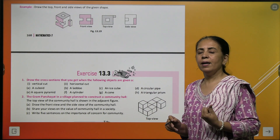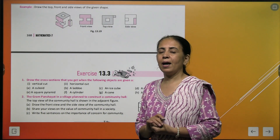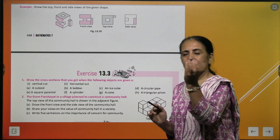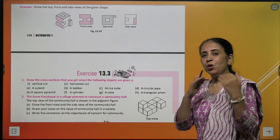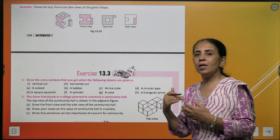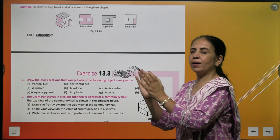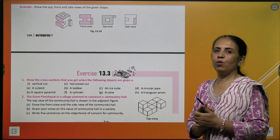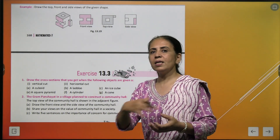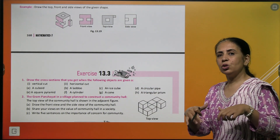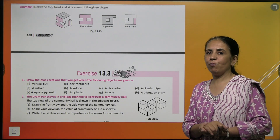You can try this with different objects — hold a pencil box and see it from all three directions. When you move on the road and see a car coming towards you, that is the front view. Viewing it from the side gives a different view, and if you are on a terrace looking down at a car passing by, that is the top view.